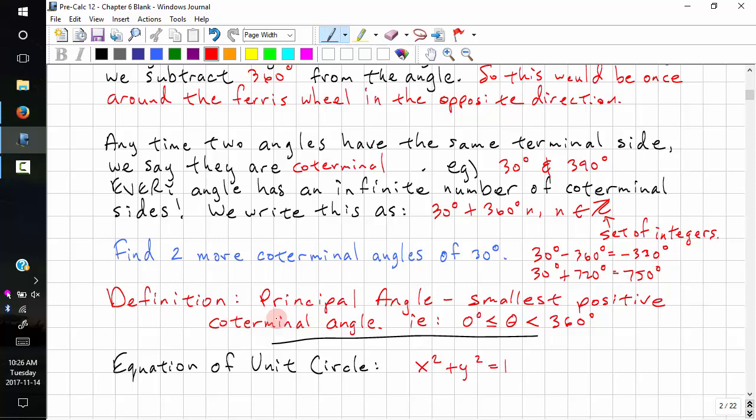Here's the definition, the principal angle. That's the smallest positive coterminal angle. When we're using degrees, it's 0 degrees inclusive, and up to 360 degrees, but not inclusive.